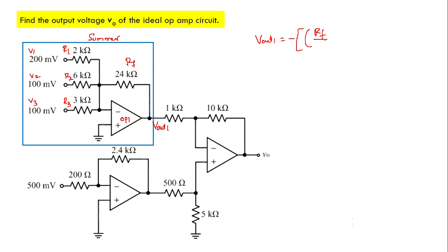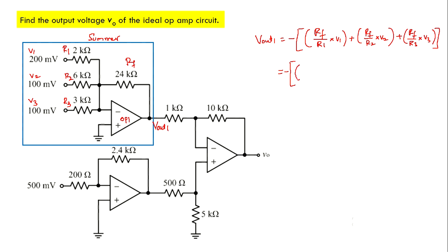The expression for Vout1 for an inverting summer is: Vout1 = minus [Rf/R1 × V1 + Rf/R2 × V2 + Rf/R3 × V3]. Now substituting values: Rf is 24 kilo ohms, R1 is 2 kilo ohms, and V1 is 200 millivolts.